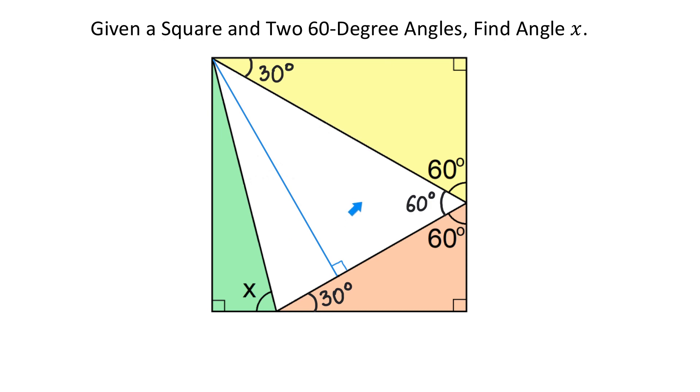In this right triangle, if this angle is 60 degrees, then this one is 30 degrees. And now, notice that these two right triangles are congruent, because they have the same angles and they share the same hypotenuse. Then we can say that this side of the yellow triangle is the same as this side of the white triangle.